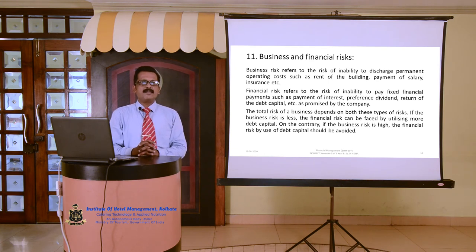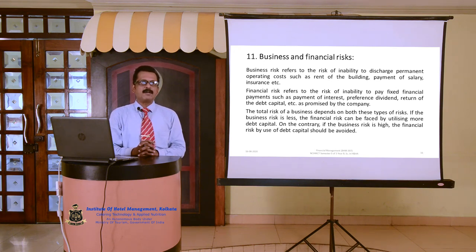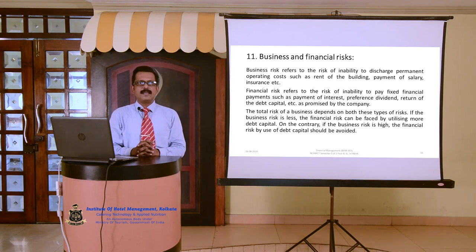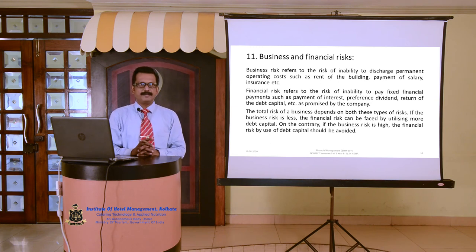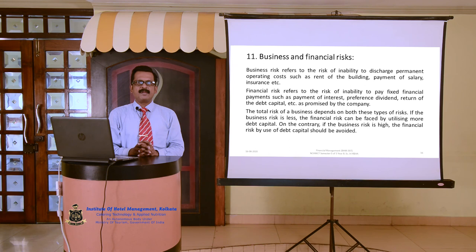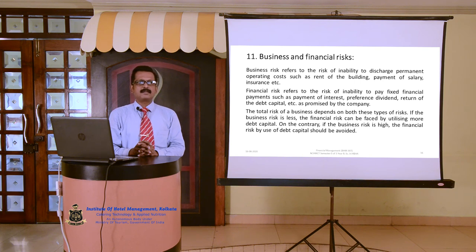Point number 11 is business and financial risk. Business risk refers to the risk of inability to discharge permanent operating costs such as rent, salary, insurance, repairs, etc. Financial risk refers to the risk of inability to pay fixed financial payments such as interest, preference dividend, and return on debt capital as promised. The total risk depends on both types. If business risk is less, more debt capital can be used in the capital structure. If business risk is high, the financial risk from using debt should be avoided.